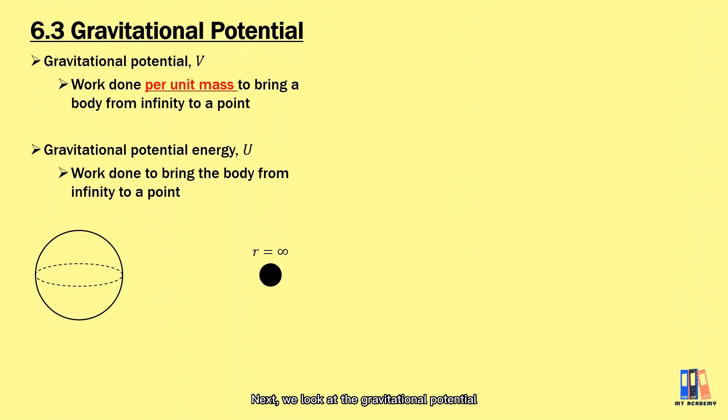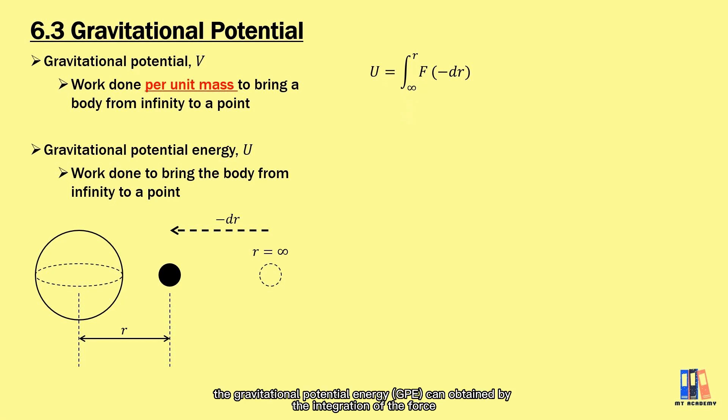Next, we look at gravitational potential. It is defined as the work done to bring a unit mass from infinity to a distance r away from the object, while gravitational potential energy describes the potential energy of the object due to gravity. As we learned about work done, which is the product of force and displacement, the GPE can be obtained by integration of the force with respect to displacement.